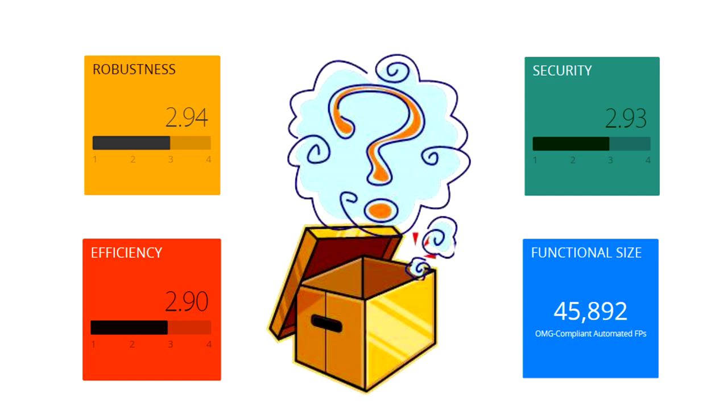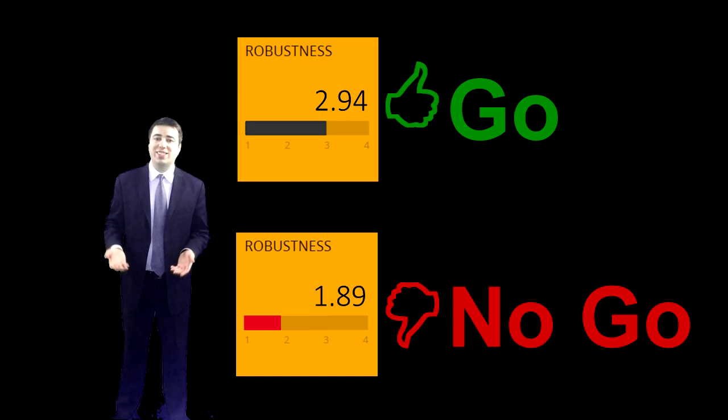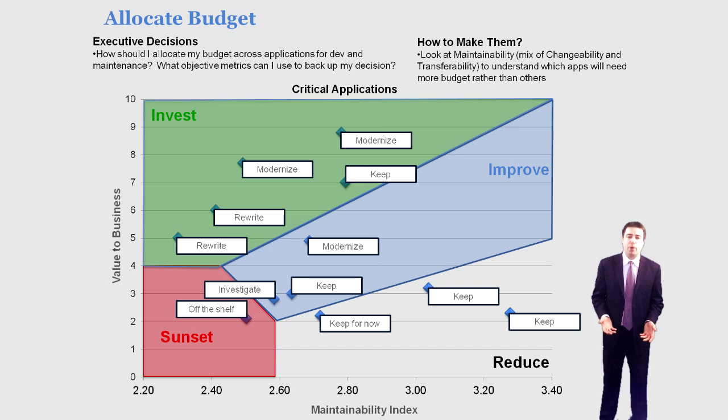This gives executives a set of metrics to make decisions by. For example, to make go or no-go decisions on whether a release should go into production. To help allocate budgets better based on application health, maintainability, and its lifecycle.